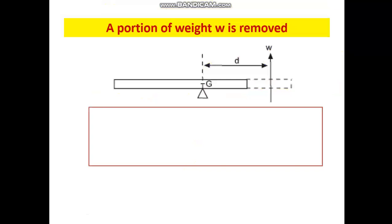Now, suppose we remove a small weight w from this plank. You can see the weight being removed is at a distance d, small letter d, from the centre of gravity of this plank. We have removed a small weight w from one side of this plank and the centre of gravity of the removed portion is at a distance d from the original centre of gravity of the object.